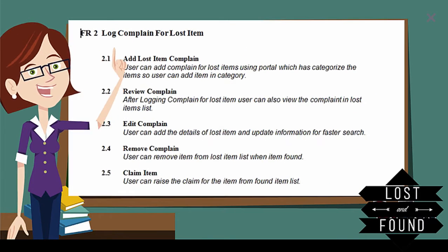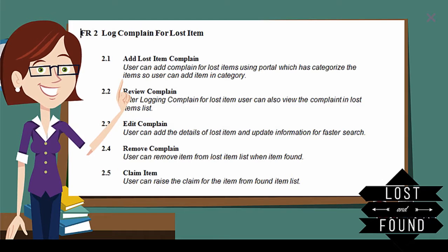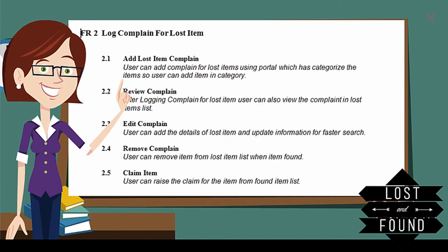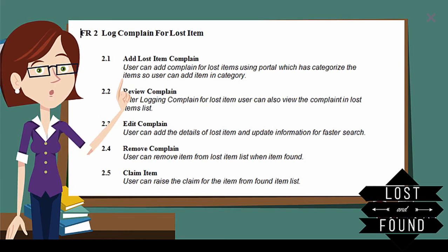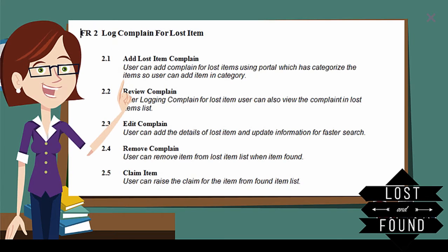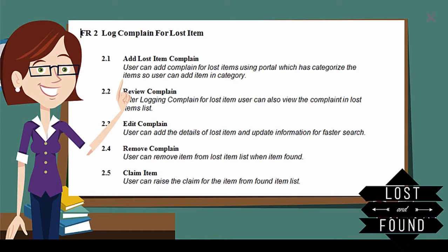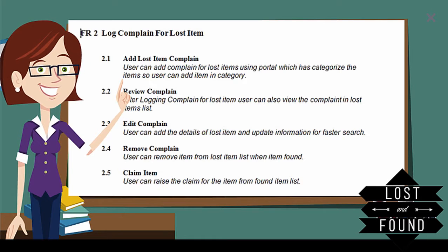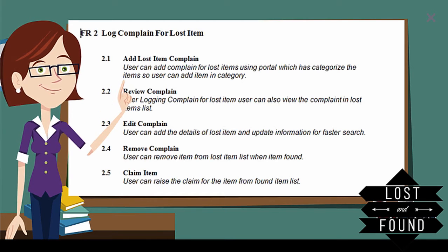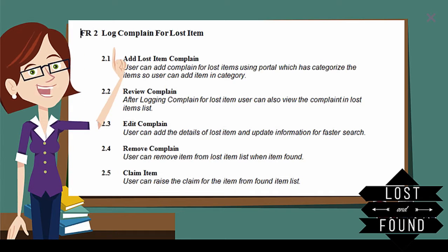The second functional requirement is log complaint for lost item, which includes adding a complaint, reviewing a complaint, editing a complaint, deleting a complaint, and claiming the item. Sub-requirement 2.1 is add lost item complaint — whenever a student loses something, they add the complaint to the system category-wise, for example adding a lost phone charger in the electronics category. Sub-requirement 2.2 is review complaint — after adding your complaint, you can review it to see if anyone has claimed that they found the item.